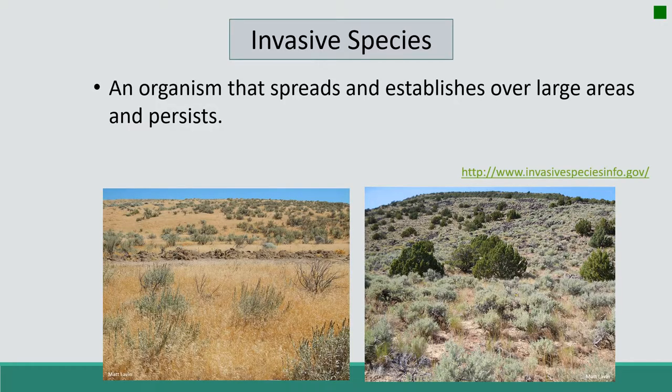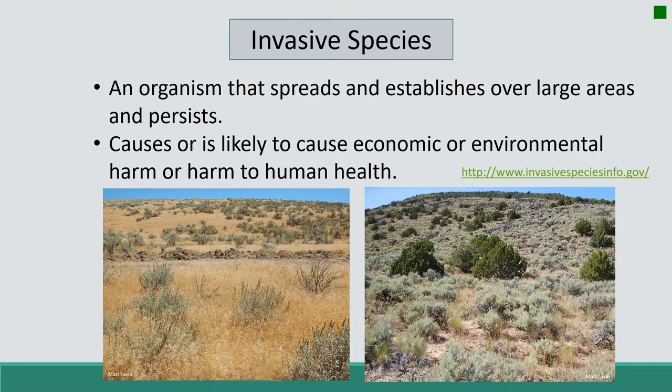Many of these species, native or introduced, can exist harmoniously in many different ecosystems. However, how native and introduced species respond to new environmental conditions influences whether we consider them to be invasive. Invasive species are those that establish and spread over large areas and persist. Persistent invasive species often displace our native species.